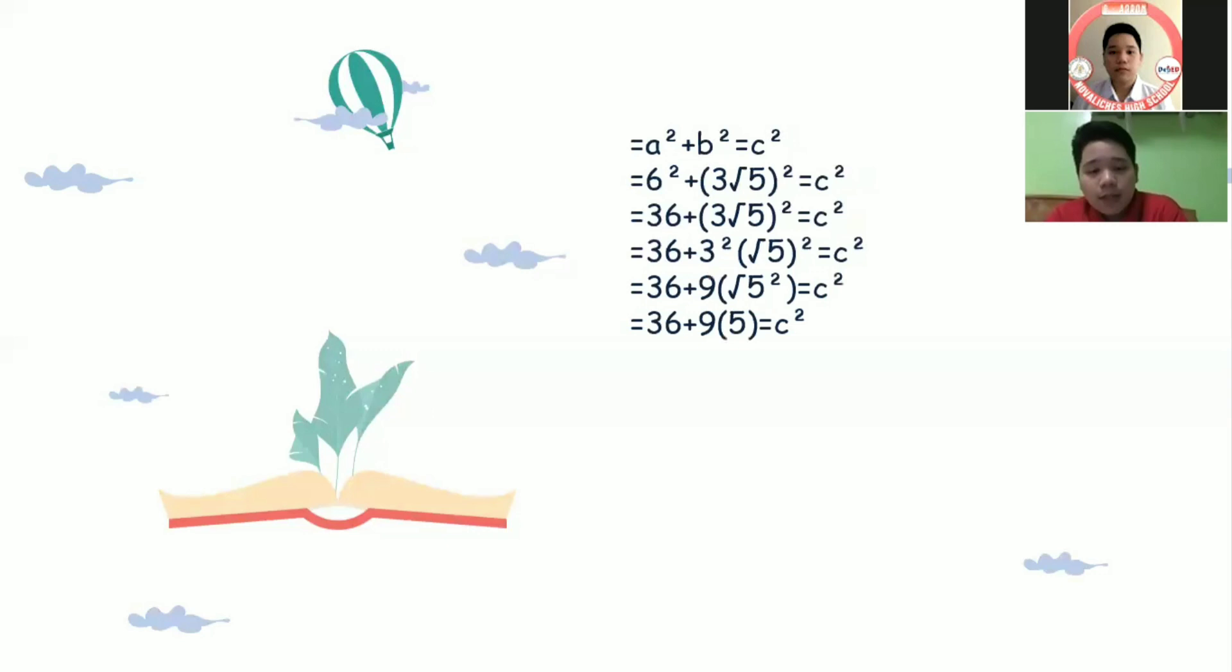Then we need to simplify the radical square root of 5 squared and it will be 5, giving us 36 plus 9 times 5 equals c squared.